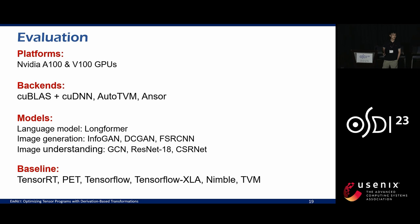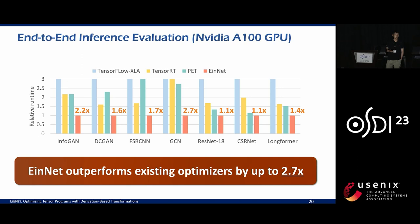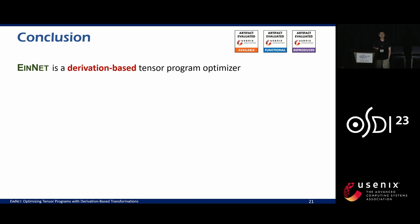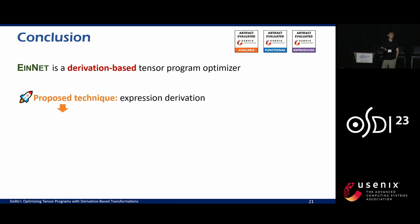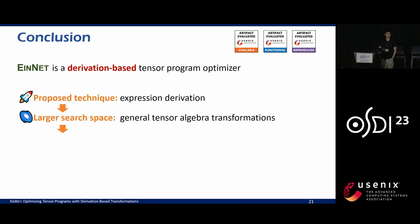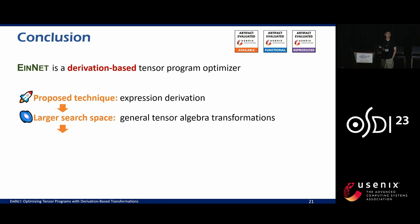We perform evaluation on different NVIDIA GPUs with different backends such as cuDNN, cuBLAS, TVM, and ANSOR, showing the approach is effective across backends. We choose different models covering language models and image models, with strong baselines such as TensorRT. The end-to-end evaluation for inference shows INET can outperform existing optimizers by up to 2.7 times. In conclusion, INET is a derivation-based tensor program optimizer. We propose tensor expression derivation to explore the general tensor algebra transformation space, achieving up to 2.7x speedup. Thank you for listening.